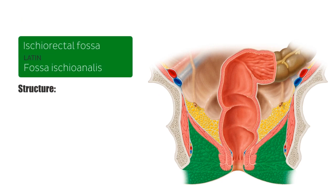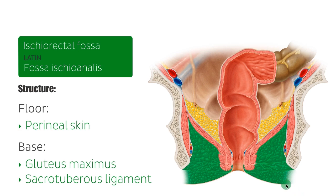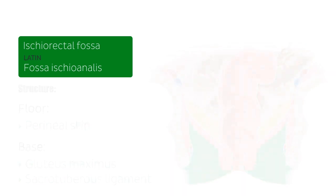The floor of the ischiorectal fossae is formed by the perineal skin, while it is bordered at its base by the gluteus maximus muscle and the sacrotuberous ligament. The ischiorectal fossae are separated from one another by the anococcygeal body.